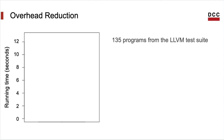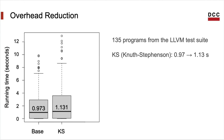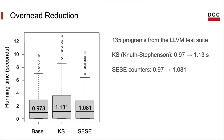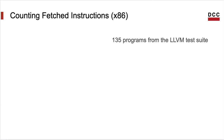Let me show some results in terms of overhead reduction due to CIS counters. Comparing running times of programs from the LLVM test suite: without any profiling, programs optimized at the -O1 level take about one second to run on average. With Knuth-Stefansson instrumentation added, this increases to 1.13 seconds as the median running time. By replacing some KS counters with CIS counters, the median running time drops to 1.08 seconds — meaning the overhead of exact profiling at -O1 is about 10%.